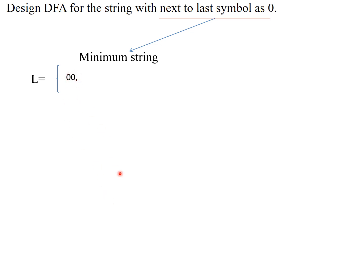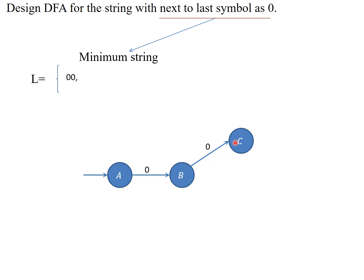As usual, there are two strings. I'll take a state A — on zero it will go to B. So A will be the initial state. There is one zero accepted: transition from A to B. There is one more zero on B, so B to C. In order to make this a valid string and accept it, C should be the final state. So this minimal string is accepted.